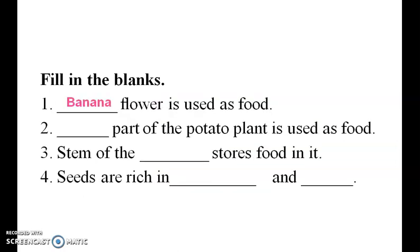Fill up the blanks. First one: banana flower is used as food. Second one: the stem part of the potato plant is used as food. Third one: the stem of the plant stores food in it.